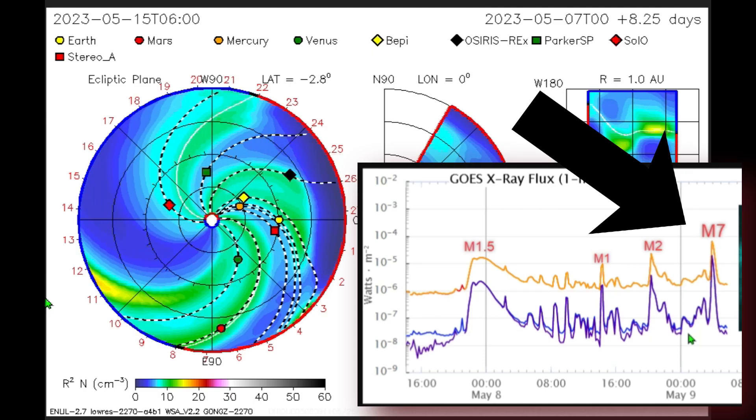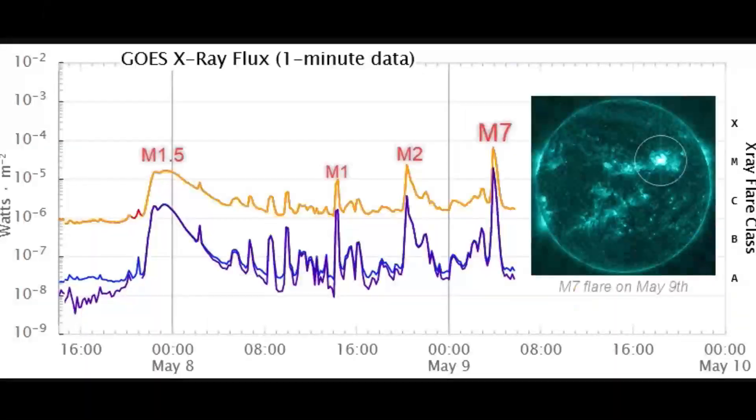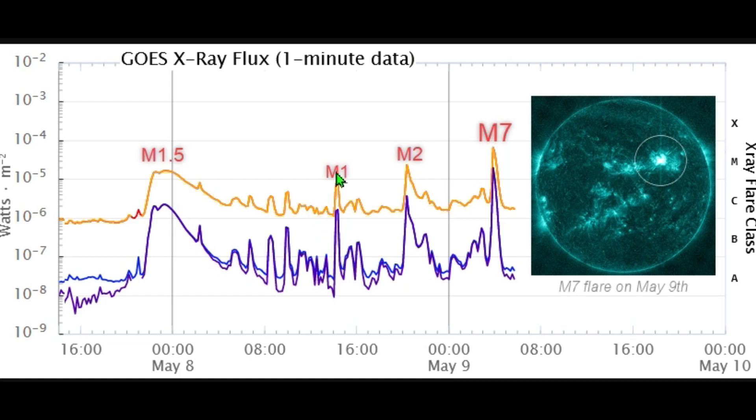So since yesterday's video, this is the M-class solar flare we were talking about yesterday. And then we had a little bit of a gap, and then look: one M-class, two M-class, and then look at this M7 M-class solar flare, nearly touching that X-class line, which would make this a much more significant situation.